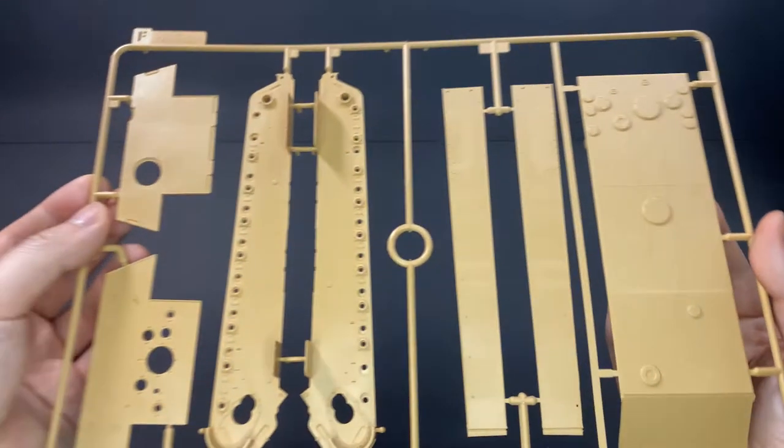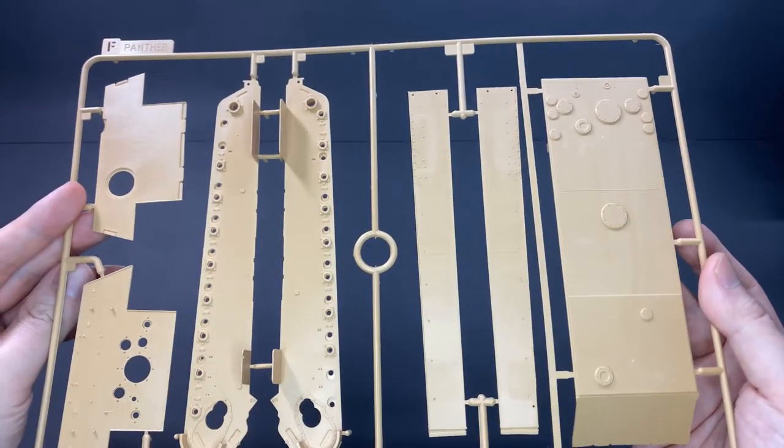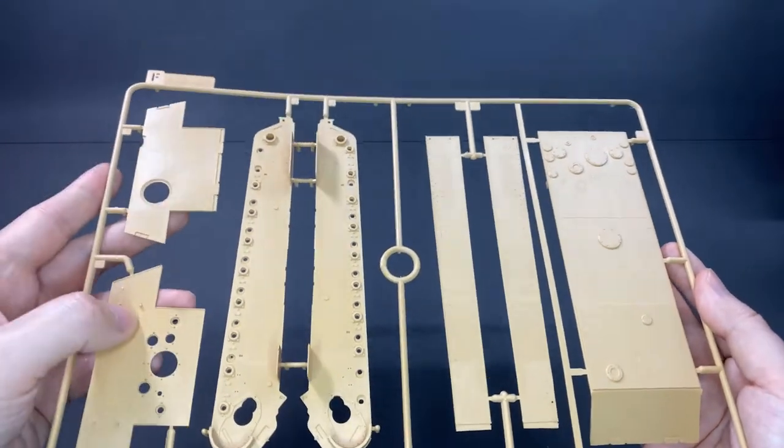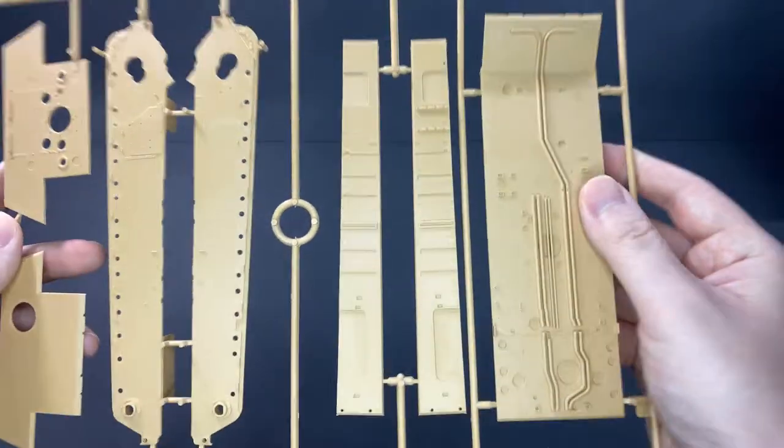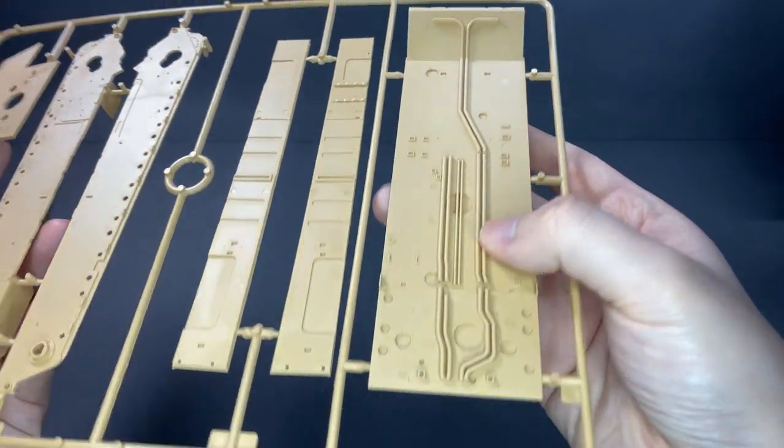Sprue F, these are parts for the bottom hull. Nothing much to see here and the rear bulkhead. There are some detail on the inside of the bottom hull. Not sure why they included that, it's gonna be hidden anyway.